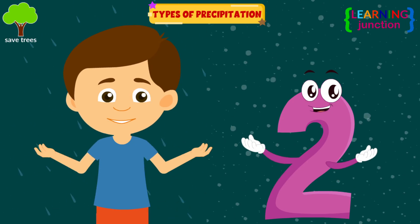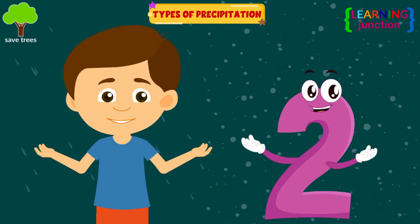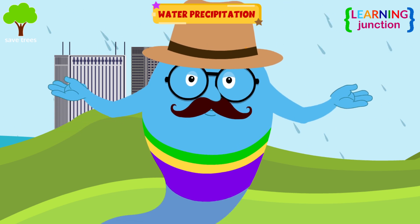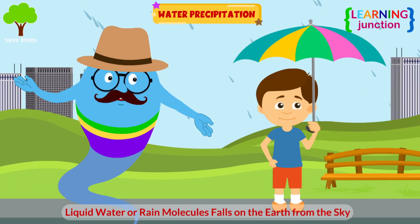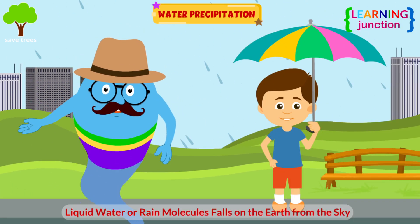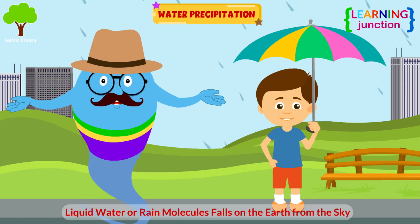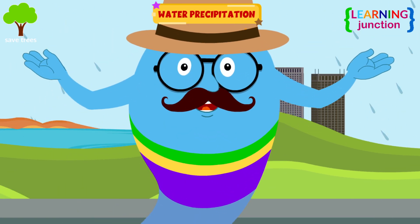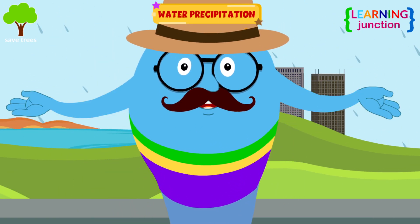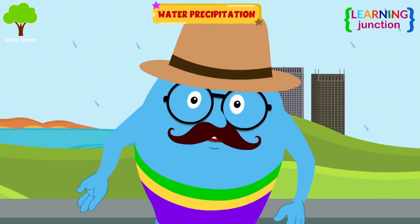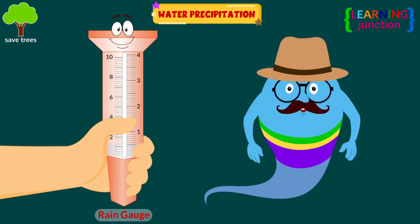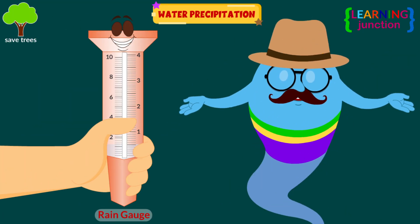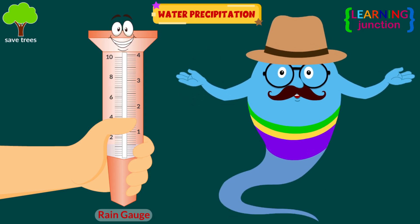Let's learn about these one by one. Water Precipitation: liquid water or rain molecules fall on the Earth from the sky. This type of precipitation can be experienced the most in any plains and places with middle or lower altitudes. A rain gauge is used to measure the amount of rainfall.